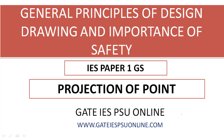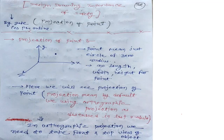Today we will discuss projection of a point. Tomorrow and the day after we will discuss plane projections, line projections, solid projections, and then your module will be over. Whenever someone asks you about projection of a point, by default this means orthographic projection — we do not need to worry about pictorial representation.